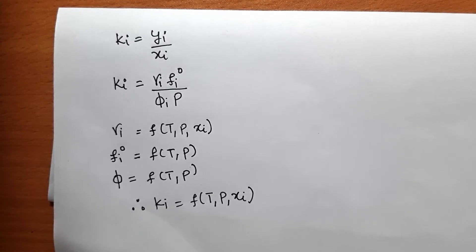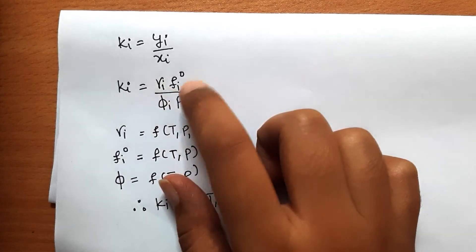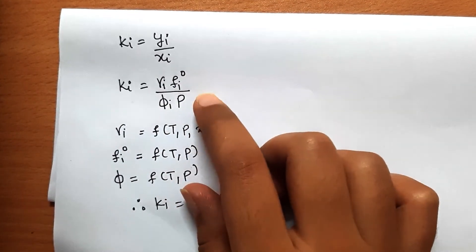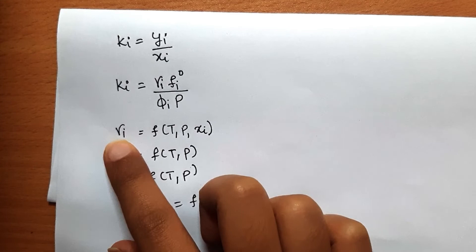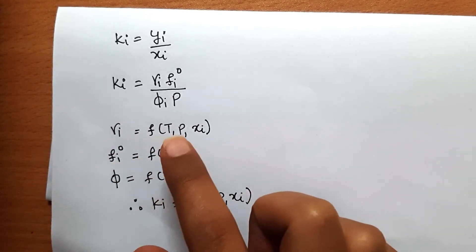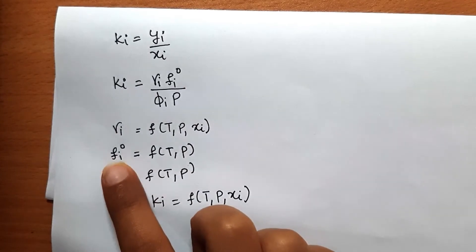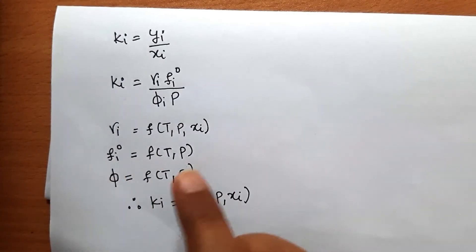From the equation, Kᵢ = γᵢ·fᵢ⁰ / (φᵢ·P). Here γᵢ, the liquid activity coefficient, depends on temperature, pressure, and liquid phase composition. fᵢ⁰, the fugacity of the pure component, depends on temperature and pressure.